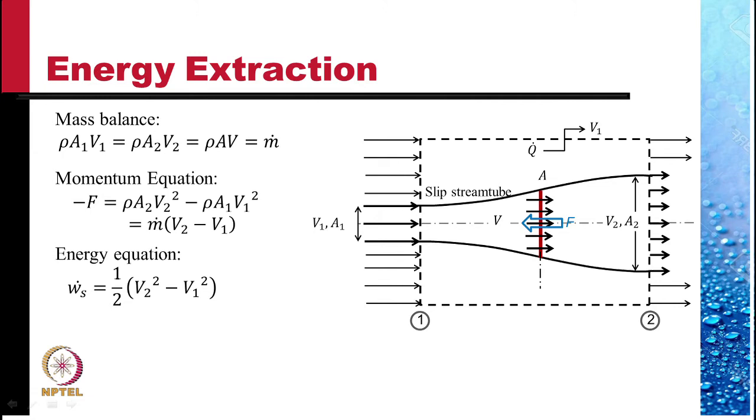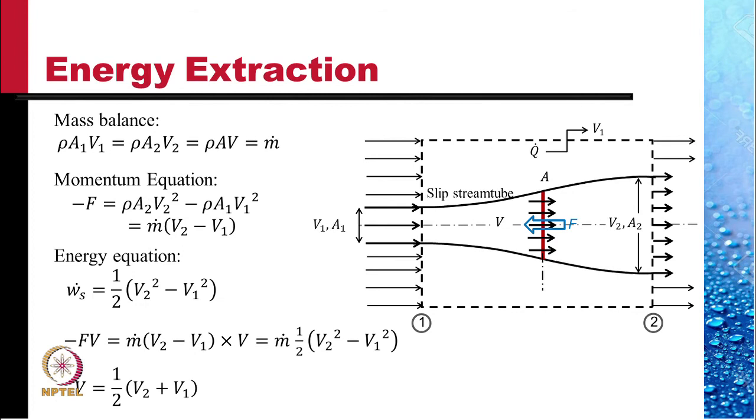We also use the energy equation in which Ws dot, the energy extracted per unit mass throughput, is one half V2 square minus V1 square. And since the energy extracted must be minus F times V, we multiply F by V and equate it to m dot one half V2 square minus V1 square.